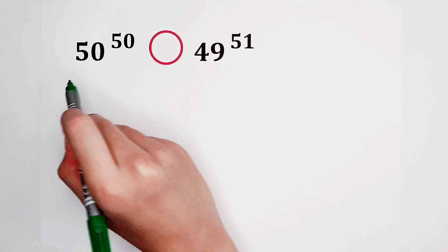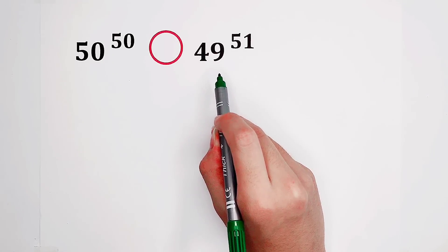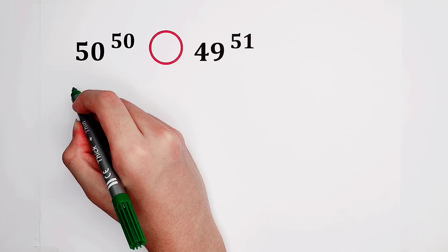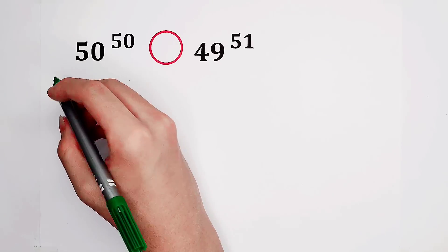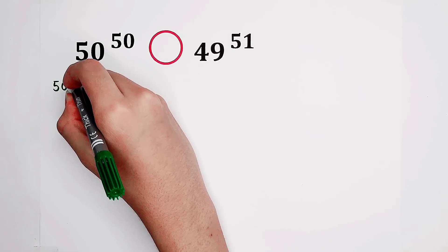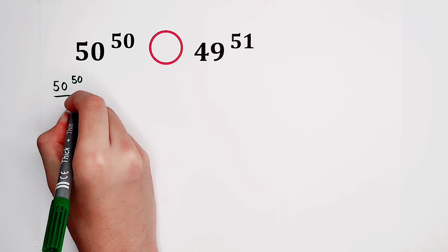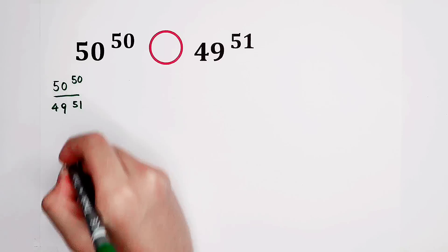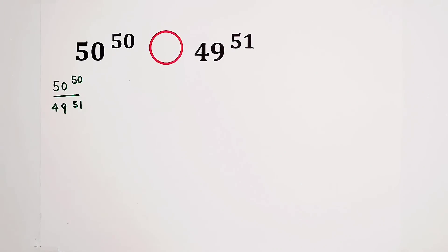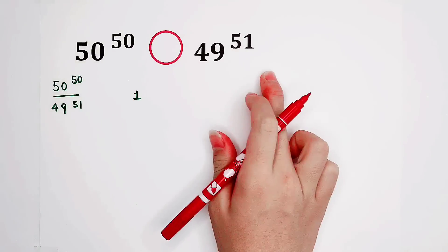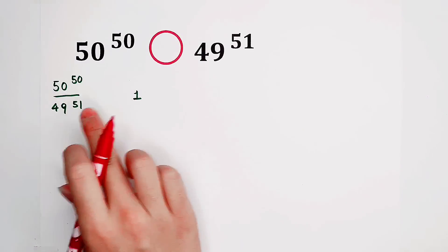So we should consider dividing both sides by 49^51. So easy. The left-hand side becomes 50^50 divided by 49^51, and the right-hand side is 1. This question becomes a comparison between these two numbers.